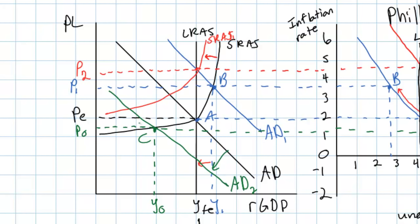In the long run, assuming the government takes no expansionary action and the central bank makes no attempt to increase the money supply, due to high and persistent unemployment, wages will begin to fall. Workers will have no bargaining power, and firms will be able to offer lower and lower nominal wages, therefore they will begin hiring more workers and output should move back to its full employment level. A fall in nominal wages will cause short-run aggregate supply to shift outwards to SRAS2, corresponding with an increase in output and a decrease in the price level.